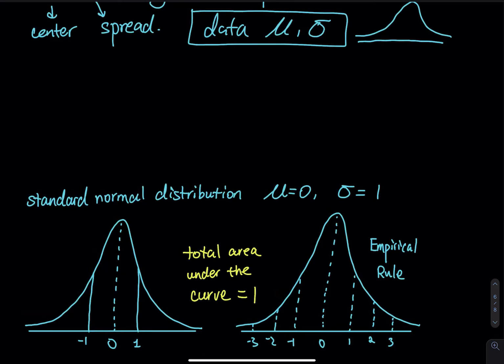Zero is right in the middle. And then we use the one to divide the curve into pieces. But the empirical rule is not changing. The total area is equal to one. That is not going to change. So this is standard normal distribution.